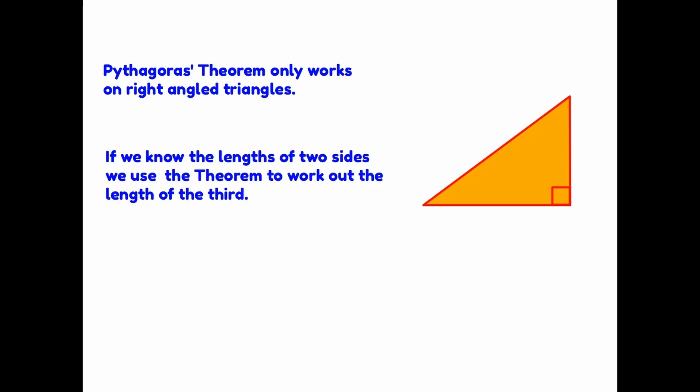Okay, let's start by having a quick look at what Pythagoras is and how it helps us. The first thing that we have to take note of is that Pythagoras Theorem only works on right-angled triangles. Do not try to use it on any other kind of triangle, it simply doesn't work. So once we have a right-angled triangle, if we know the lengths of two of the sides, we use the Theorem to work out the length of the third side and that is what Pythagoras is all about. So let's have a look at how it actually works.